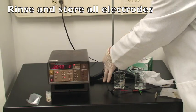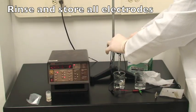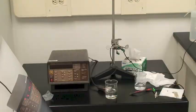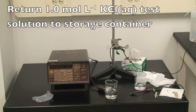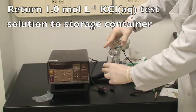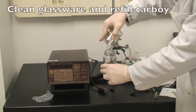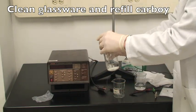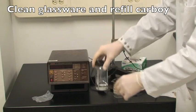Rinse and store your two electrodes, and power down the electrometer. Return the one molar potassium chloride test solution to the storage container. And please, before exiting the lab, clean all glassware and refill the carboy with distilled water.